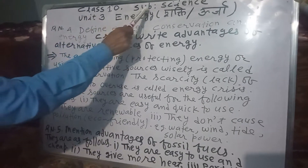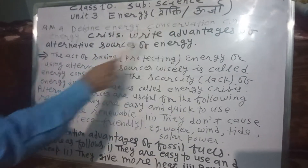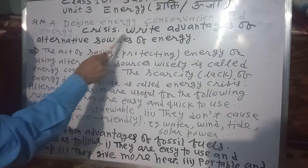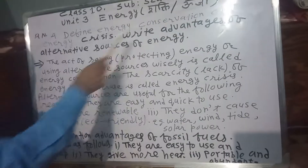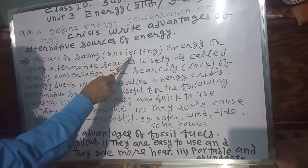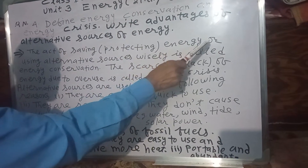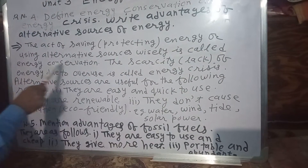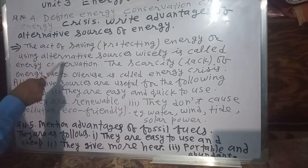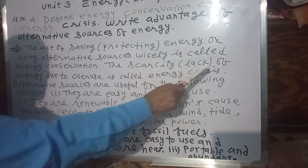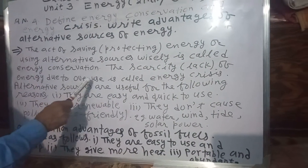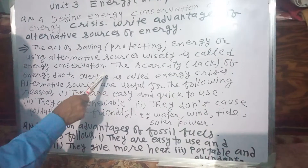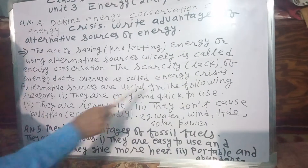Class 10, subject: Science, Unit 3, Energy. Question number four: Define energy conservation and energy crisis. Energy conservation is the act of saving, protecting, or conserving energy, or using alternative sources of energy wisely. Energy crisis is the scarcity or lack of energy due to overuse caused by over-industrialization, urbanization, deforestation, etc.